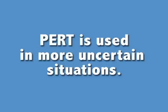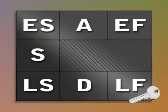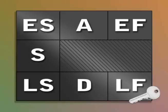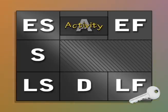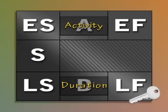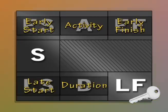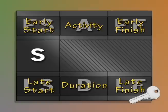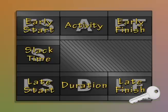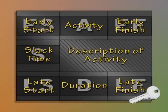We're going to start with the Critical Path Method since it is the simplest way. We're going to use a method that's a little different than in your book. We're going to use this key. In the center block, A represents activity, D represents duration, ES is early start, EF is early finish, LS is late start, and LF is late finish. Over here we have S which equals slack time. The block with diagonal lines is where you can write a description of the activity if you choose to do so.